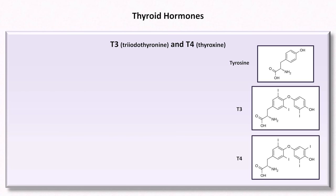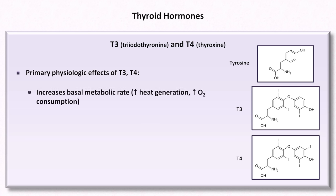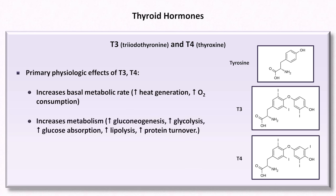What do T3 and T4 do? They have the greatest diversity of actions of any hormone. Their primary effects are first, to increase the basal metabolic rate, which results in increased heat generation and oxygen consumption. Second, they rev up metabolism, specifically increasing gluconeogenesis, glycolysis, glucose absorption from the GI tract, lipolysis, and protein turnover.